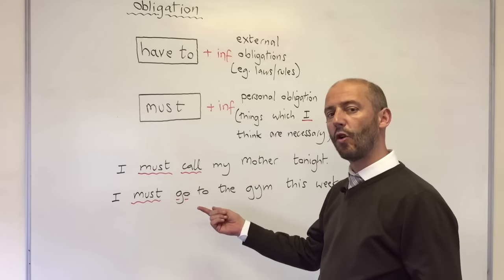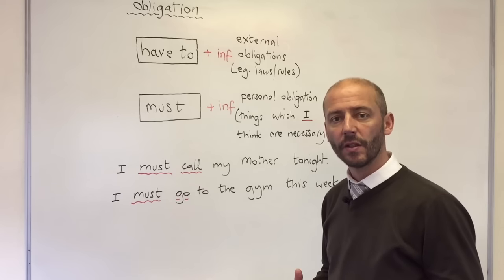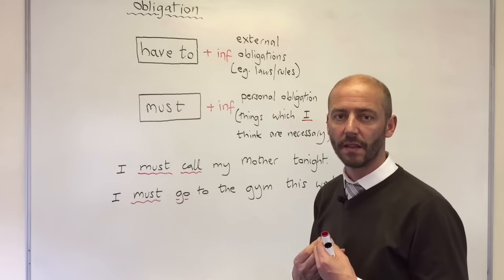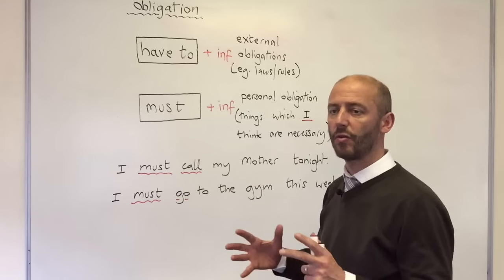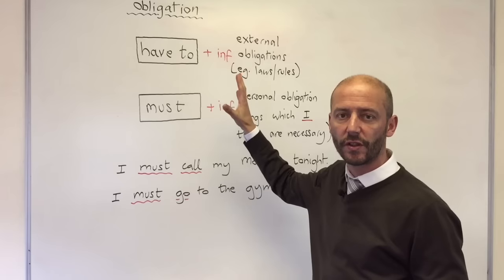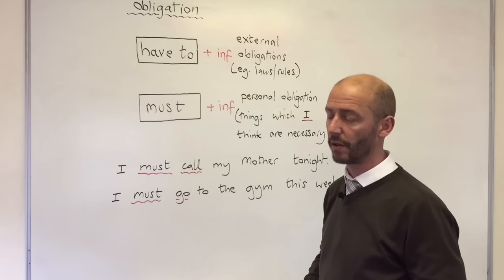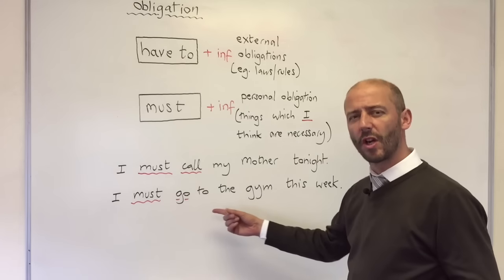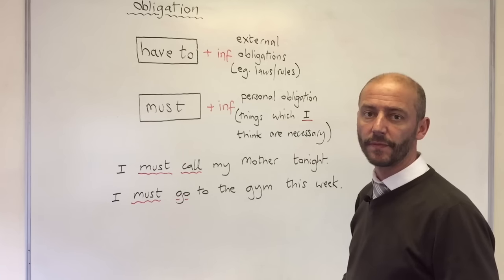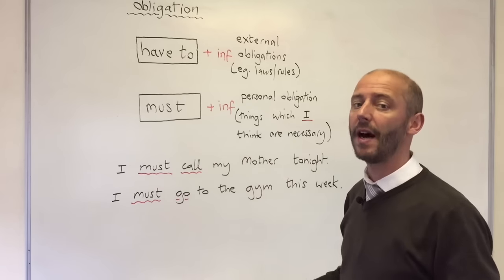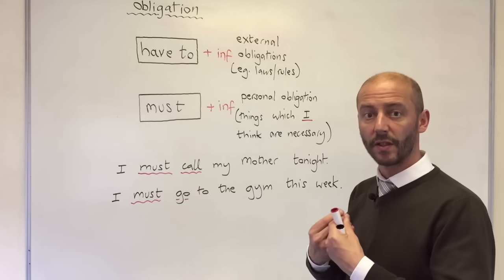Must we tend to use more for personal obligations — things which I think are necessary. For example: I must call my mother tonight. This is me talking to me; I think this is necessary. These aren't rules and regulations or external obligations — these are internal obligations. I must go to the gym this week; I want to get fit. There's nobody telling me I have to go to the gym — this is me talking to me.